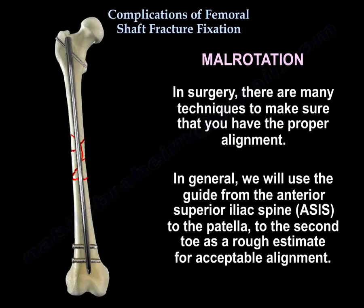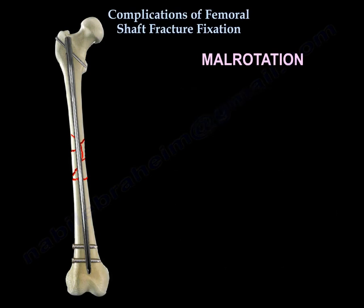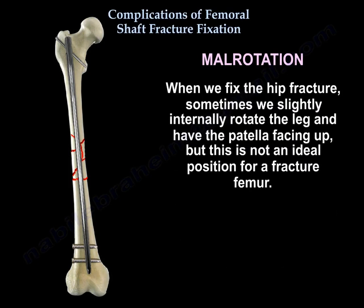In surgery, there are many techniques to ensure proper alignment. In general, people use the guide from the anterior superior iliac spine to the patella to the second toe as a rough estimate for acceptable alignment. When fixing a hip fracture, we sometimes slightly internally rotate the leg with the patella facing up, but that is not an ideal position for a fractured femur.